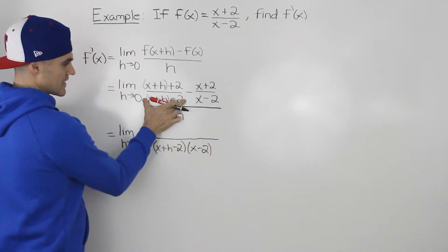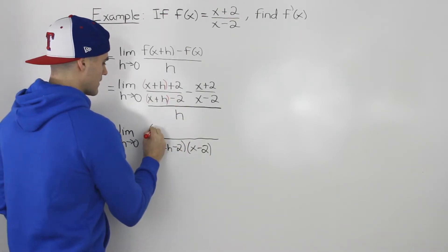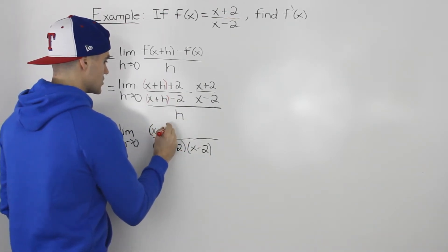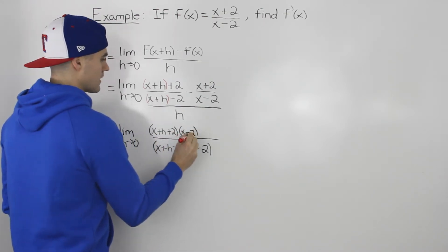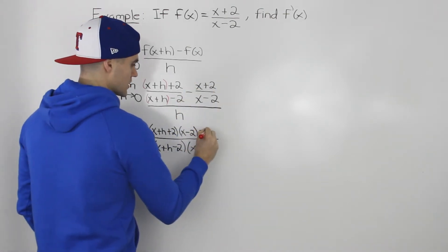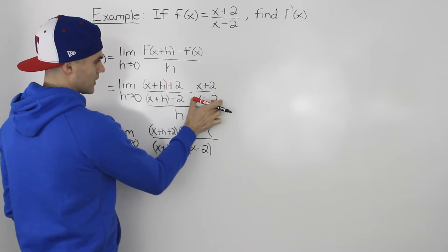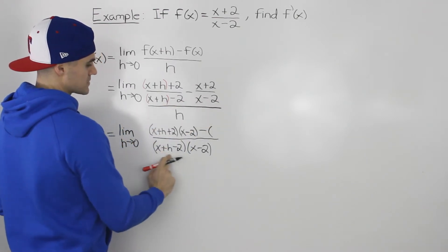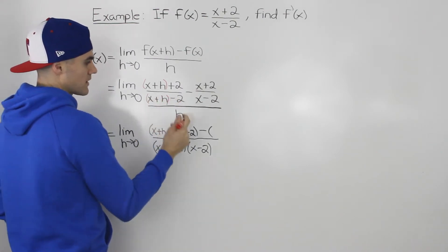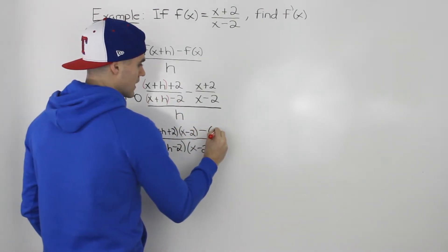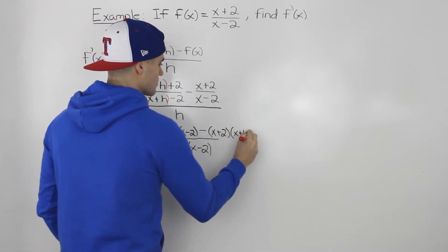Because we multiplied the first denominator by (x-2), we have to multiply that numerator by it as well, giving us (x+h+2)(x-2). And since the second denominator (x-2) was multiplied by (x+h-2), we have to multiply that numerator (x+2) by (x+h-2) as well, giving us (x+2)(x+h-2).